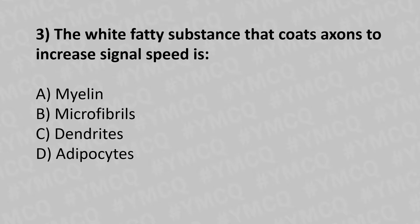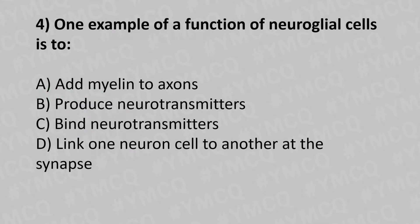Let's move to our third question. The white fatty substance that coats axons to increase the signal speed is: Option A: myelin. Option B: microfibrils. Option C: dendrites. Option D: adipocytes. And the answer is option A: myelin.